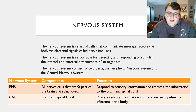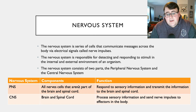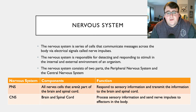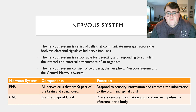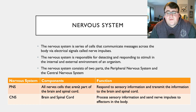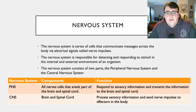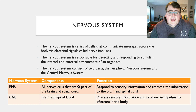So what is the nervous system? Well, the nervous system is a series of cells that communicate messages across the body via electrical signals that we call nerve impulses. The nervous system is responsible for detecting and responding to stimuli that occur in both the internal and the external environments of an organism.